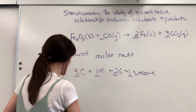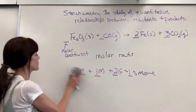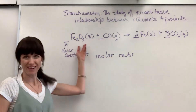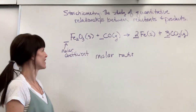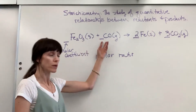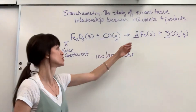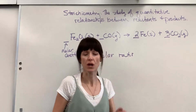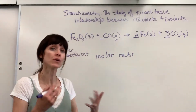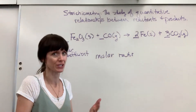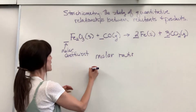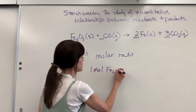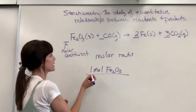Let's look at our equation right here. One mole of iron(III) oxide reacts with one mole of carbon monoxide to produce two moles of iron and three moles of carbon dioxide. Now we can write these ratios. I could say one mole of iron(III) oxide will react with one mole of carbon monoxide.